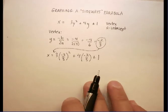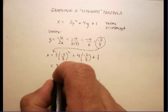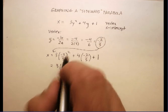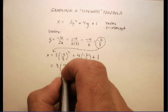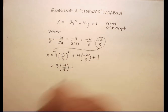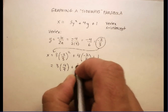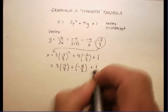Now I can go ahead and calculate what that's equal to. So let's try that. That's going to be 3 times negative 2 thirds squared is a positive 4 ninths. 4 times a negative 2 thirds is a negative 8 thirds. And 1 is just 1.